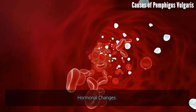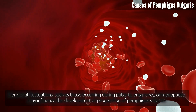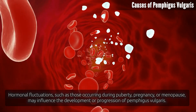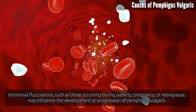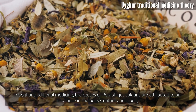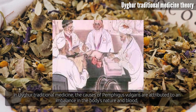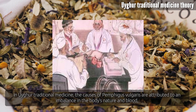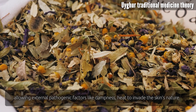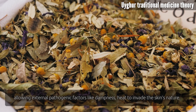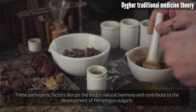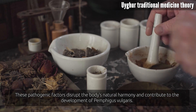Hormonal changes: Hormonal fluctuations, such as those occurring during puberty, pregnancy, or menopause, may influence the development or progression of Pemphigus vulgaris. In traditional medicine, the causes are attributed to an imbalance in the body's nature and blood, allowing external pathogenic factors like dampness and heat to invade the skin, disrupting the body's natural harmony.